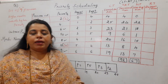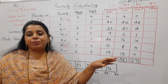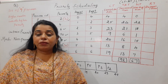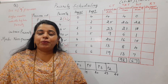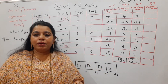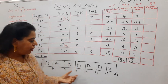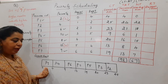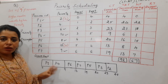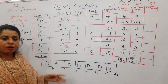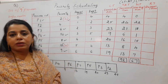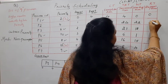In non-preemptive scheduling, the response time equals the waiting time. Response time is the time at which a process first gets the CPU minus its arrival time. In non-preemptive mode, the first time a process gets the CPU is also the last time — it completes without interruption — so waiting time and response time are the same.